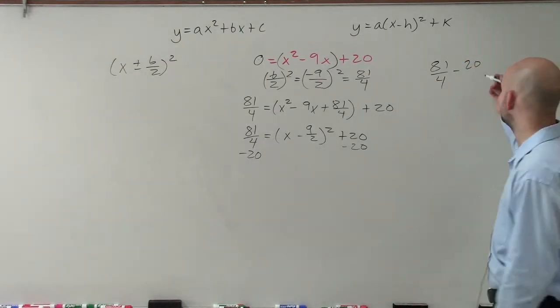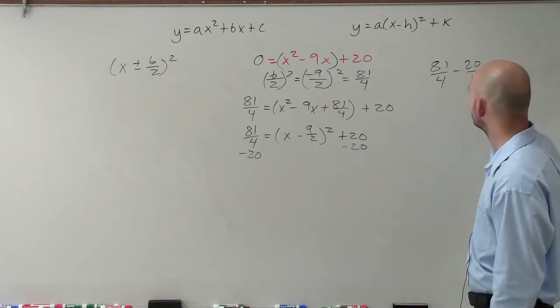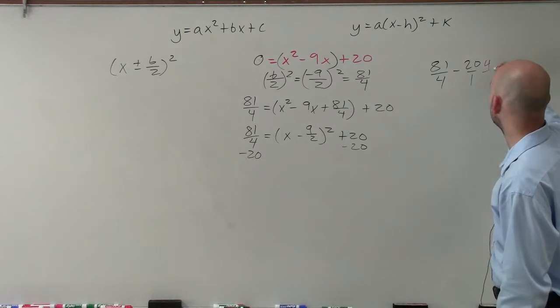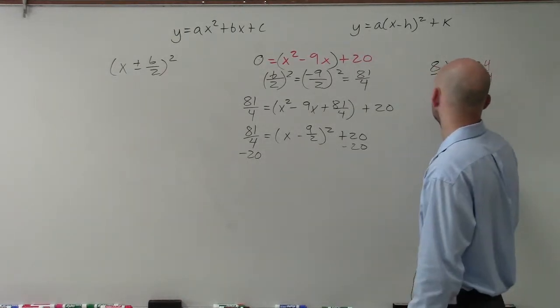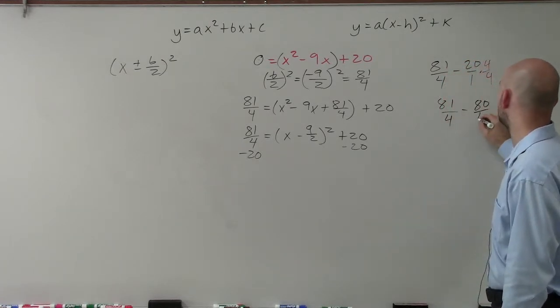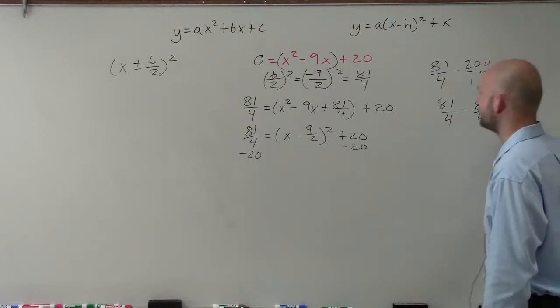Well, in this case, what we need to do is we need to make sure we have the same denominator. So I'm going to put the denominator as 1. And then to get the same denominator, I need to multiply by 4 over 4. So therefore, that will give me 81 over 4 minus 80 over 4, which equals 1 over 4.